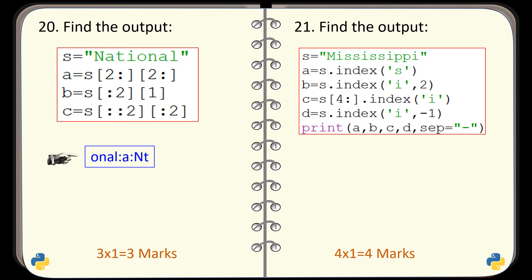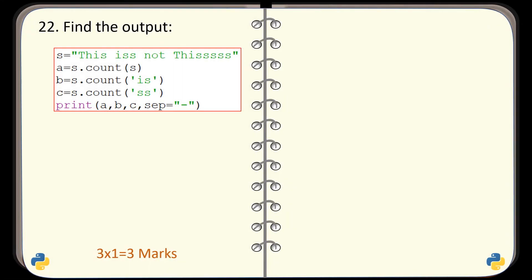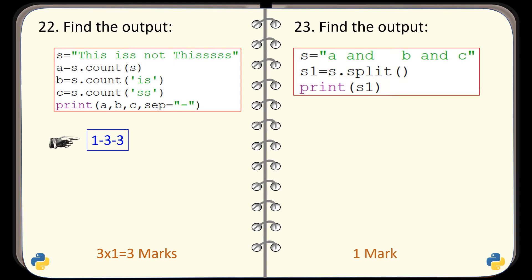Question number 21. Again, find the output generated by this code. And the correct output is this one. Question number 22. Find the output generated by this code. And the output generated is this one. Question number 23. Again, find the output generated by this code. And the output generated is this one.